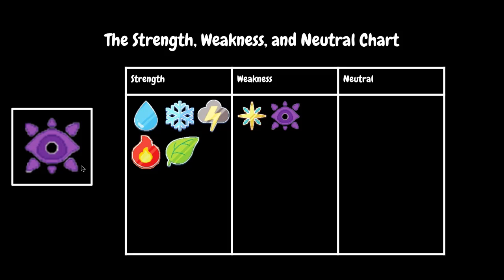Shadow — the evil element. Its Strengths are water, ice, storm, fire, and plant, which makes it one of the best elements. It's too bad we don't have it. It's kind of similar to Astral — Astral is neutral against a lot of things, but Shadow is strong against a lot of things. But remember, Astral is powerful against Shadow.